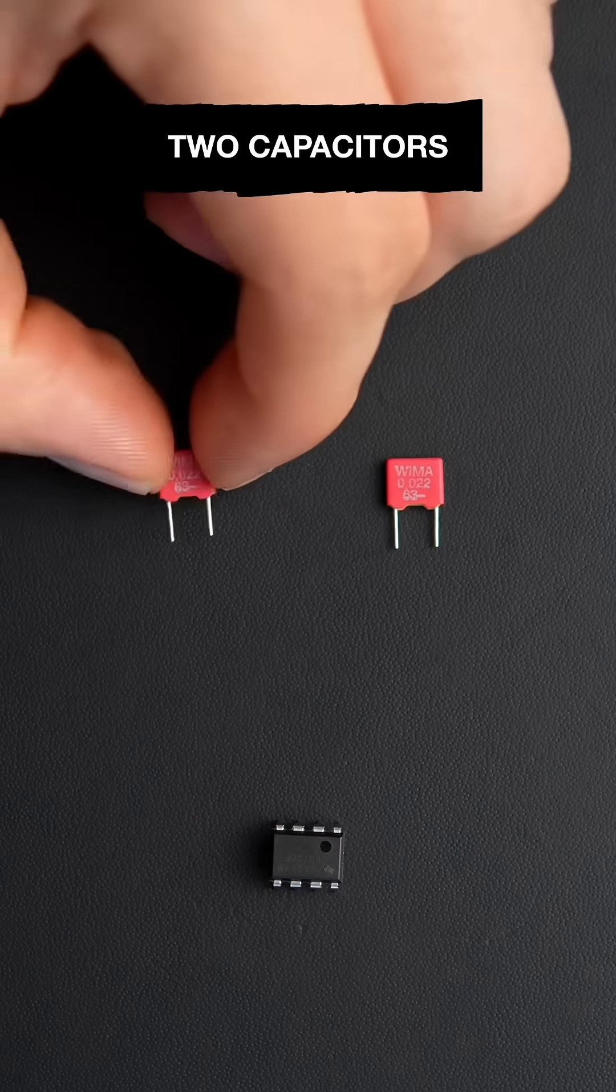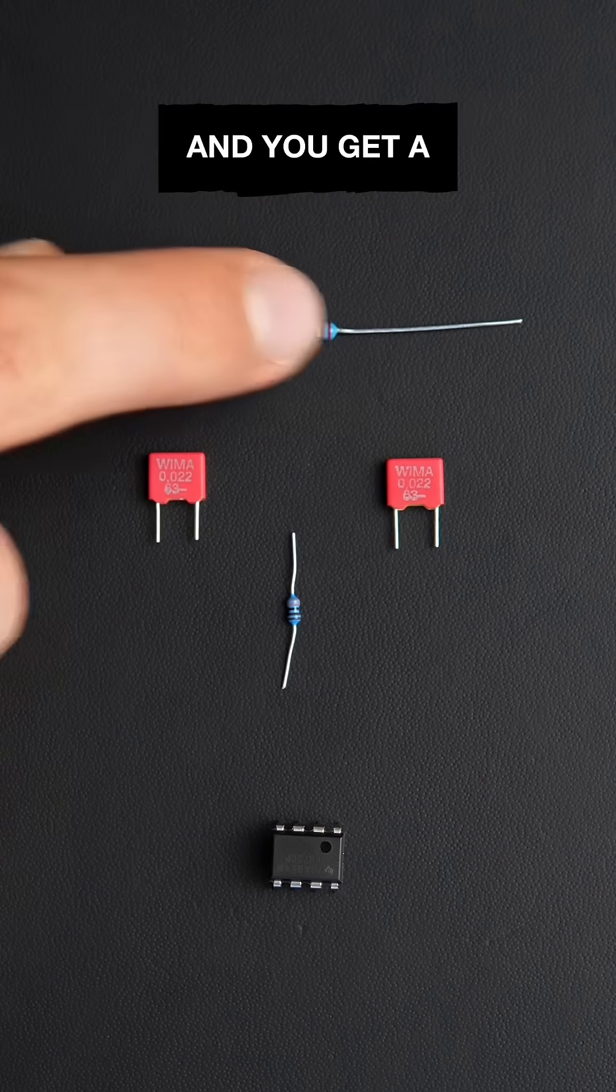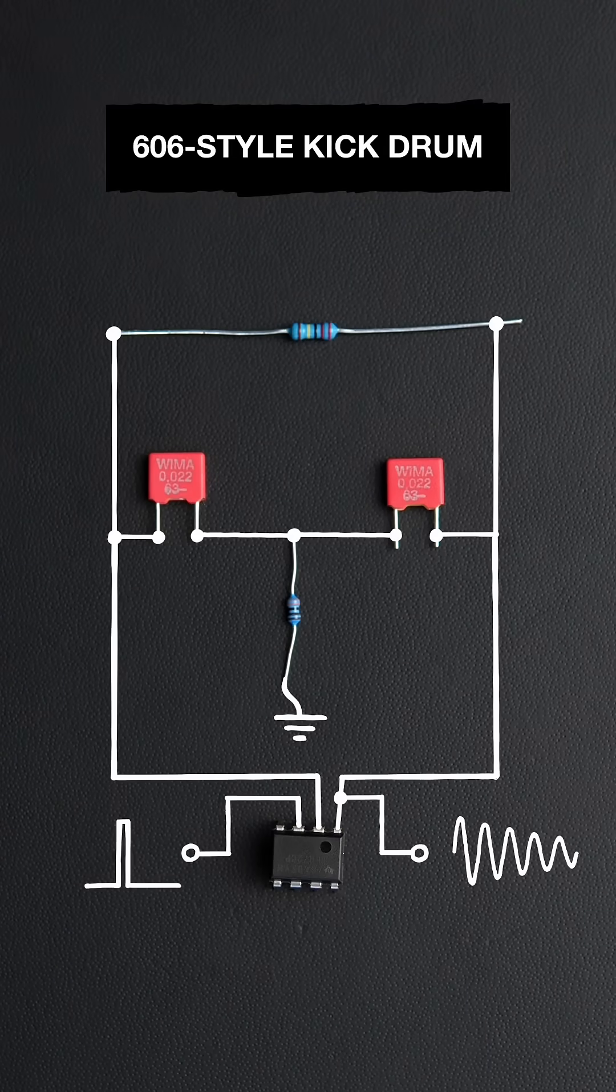Wire up an opamp, two capacitors and two resistors like this, and you get a 606-style kick drum.